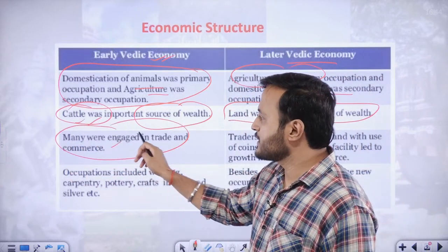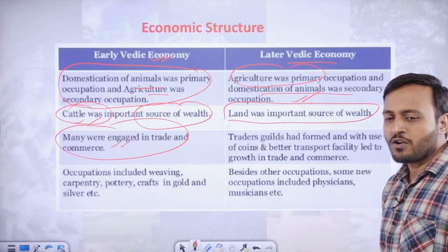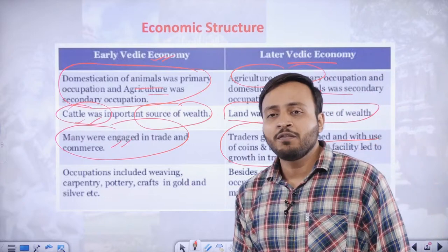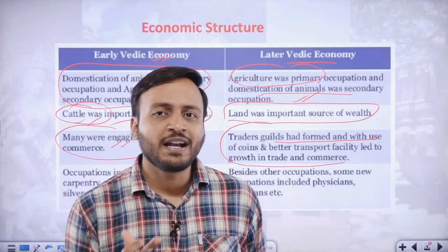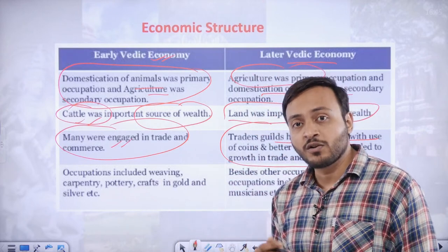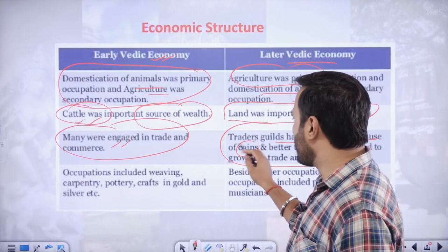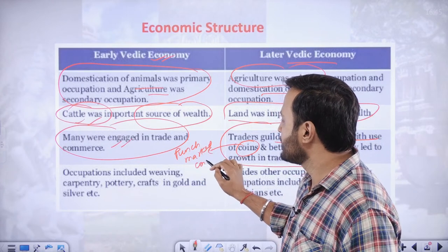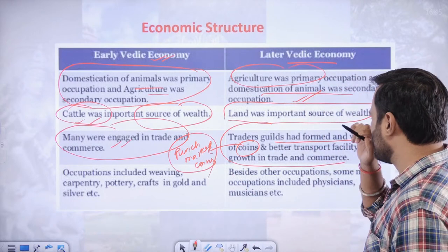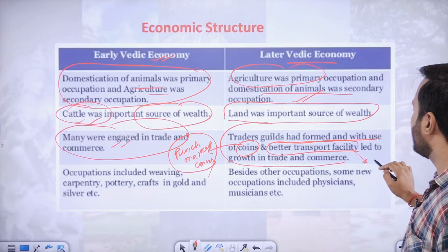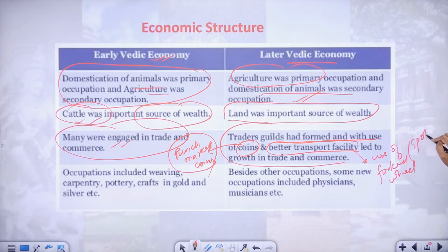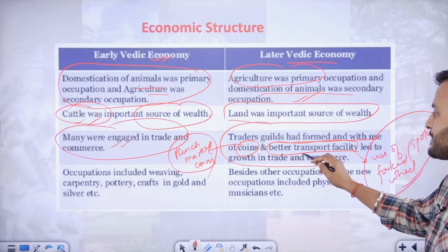Trade and commerce became the most important practice in the later Vedic period. The beginning of coins — punch marked coins — and the formation of trading groups started. For better transportation, the use of spoked wheels began during this time period.